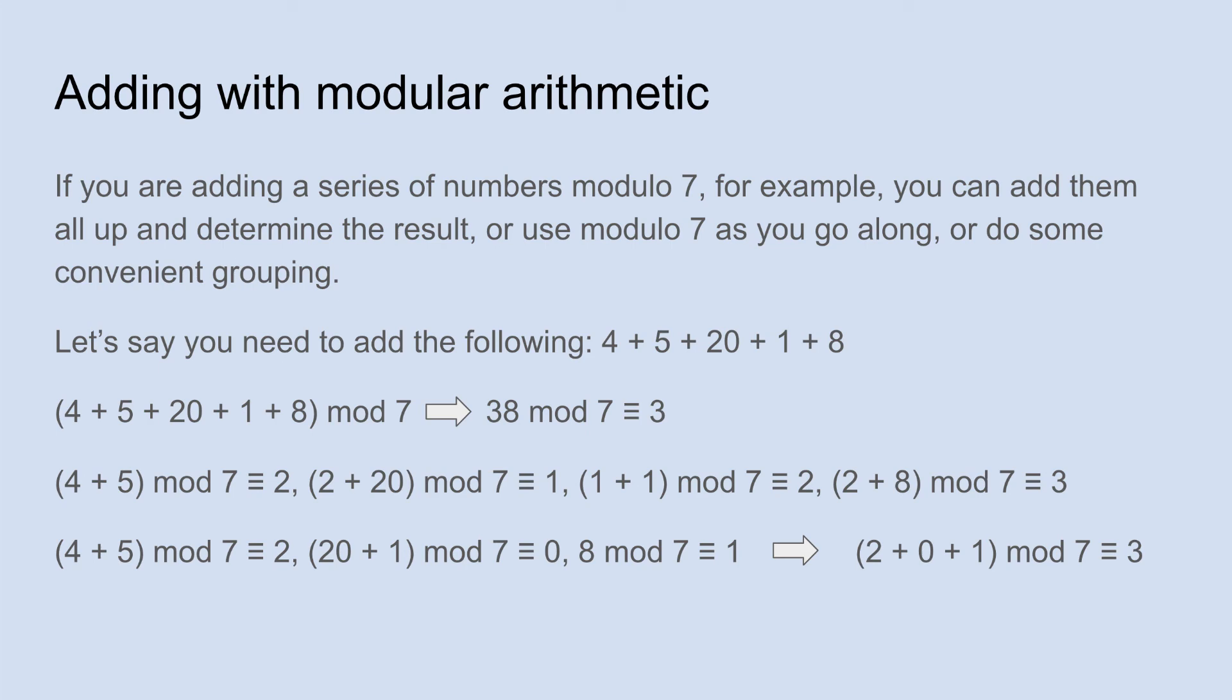You could also keep a running total. So when I do the algorithm to calculate a day of the week, this is the way I do it. I do a running total. So I would do 4 plus 5, which is 9, and 9 mod 7 is just 2.